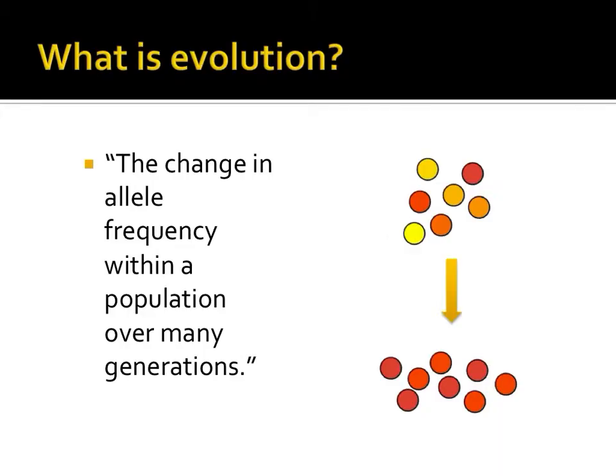Evolution can be defined as the change in allele frequency within a population over many generations. What this means, in simpler terms, is that evolution doesn't occur to individuals, but to large groups of organisms of the same species. This process doesn't occur quickly, but over many lifetimes. Given long periods of time, certain traits become more or less common in a population.